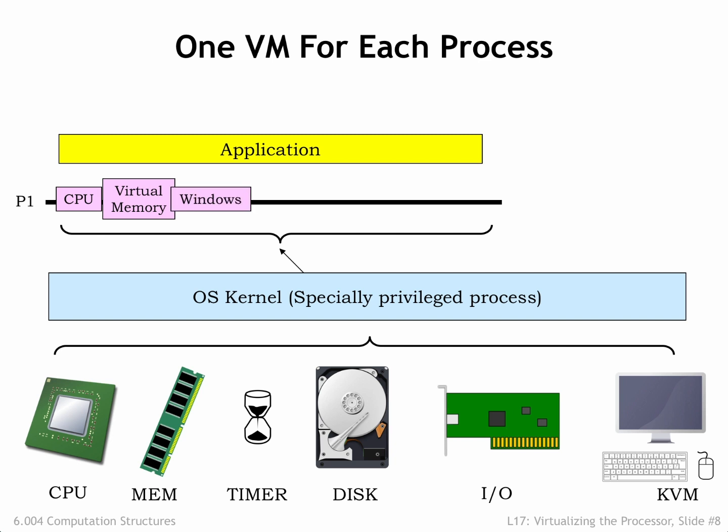The notion of a window allows the process to access a rectangular array of pixels without having to worry if some pixels in the window are hidden by other windows, or how to ensure the mouse cursor always appears on top of whatever is being displayed. Instead of accessing IO devices directly, each process has access to a stream of IO events that are generated when a character is typed, the mouse is clicked, etc.